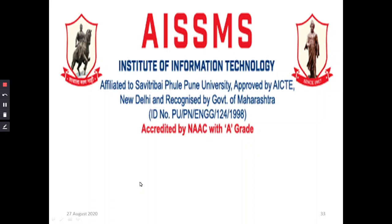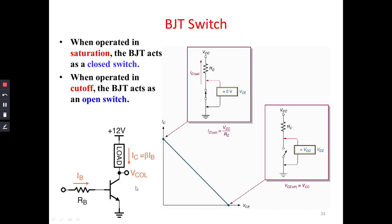We are going to discuss how the transistor acts as a switch, or how the BJT acts as a switch. This is the circuit diagram for the BJT as a switch. As we already discussed in the output characteristics of an amplifier, the transistor works in three modes of operation: the saturation region, cutoff region, and active region. The region of operation as a switch will be the cutoff region as well as the saturation region.